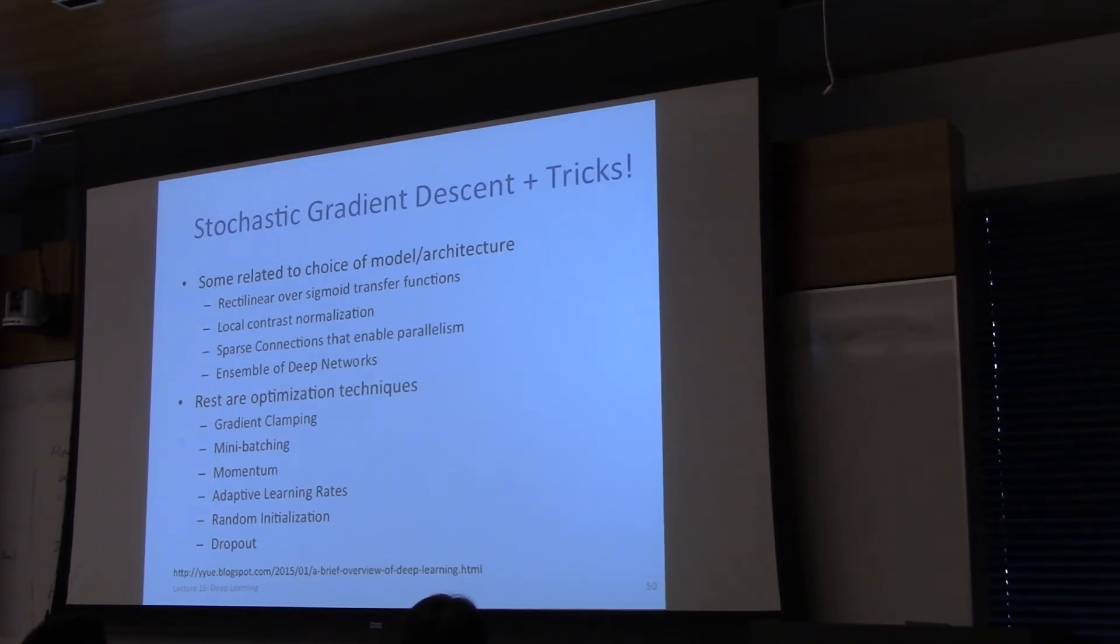Here's a bunch of tricks. So basically, here's one of the tricks. Training notes is just stochastic gradient descent plus tricks. So the choice of rectilinear over sigmoid, local contrast normalization, mini-batching, and stochastic gradient descent using momentum and adaptive learning, it's a bunch of tricks. I invited one of the experts in deep learning to write a blog post on my blog. So if you're interested in all these details, you can check this out.